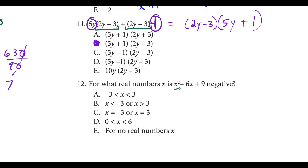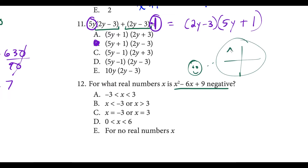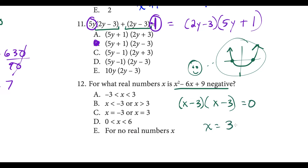Question twelve: we want to know for what real numbers x is this quadratic negative. When you have a quadratic, it's negative between its roots. We have a positive x squared, so this is a smiling parabola. We factor it as x minus 3 times x minus 3 — set equal to zero. The catch is there's a single root at x equals 3, meaning this quadratic is tangent to the x-axis and never goes below it. So the answer is no real numbers x, which is choice E.